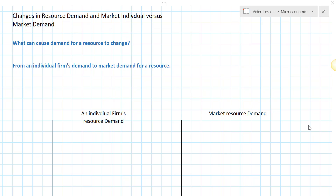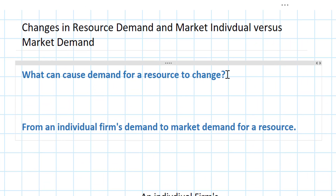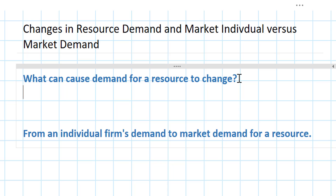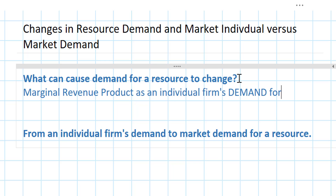This is going to be a pretty quick lesson in which we outline the things that can cause the demand for a resource to change, and we introduce the idea that the total demand for a resource in the market is made up of the combined demands from every individual firm in that market. In our last lesson we introduced the concept of marginal revenue product as an individual firm's demand for a resource. The resource we focused on was labor, and we're going to continue looking at labor markets in this lesson.